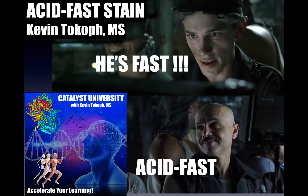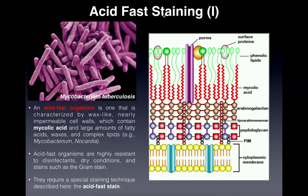In this video we're going to discuss one of the staining procedures from experiment four, and that is the acid fast stain. The acid fast stain is a staining procedure that refers to organisms called acid fast organisms and it can be used to identify those.